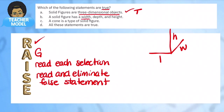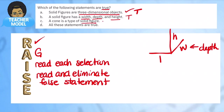The second statement: a solid figure has a width, a depth, and a height — that is also true. We use the term depth for how far back it goes. The third statement: a cone is a type of solid figure — that's true as well. That leaves us with option D: all of these statements are true. In this case I can't eliminate anything — that is the correct answer.